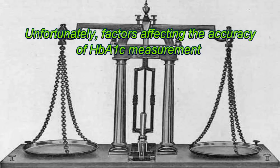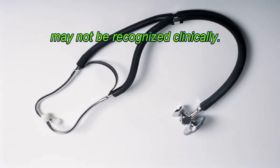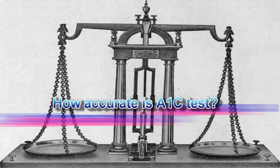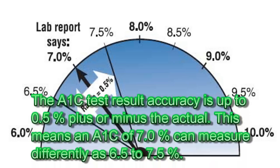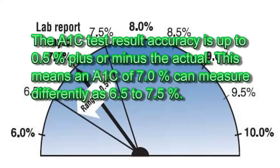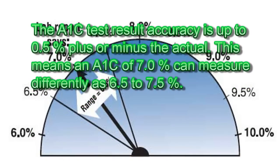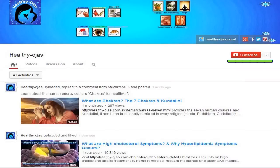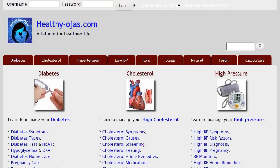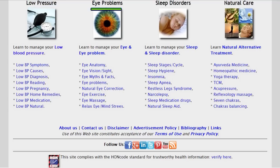Unfortunately, factors affecting the accuracy of HbA1c measurement may not always be recognized clinically. The A1c test result accuracy is up to plus or minus 0.5% of the actual value, meaning an A1c of 7.0% could be measured as anywhere from 6.5% to 7.5%. Subscribe to our video channel for more videos and visit HealthyOjas.com for useful information on diabetes, cholesterol, high and low blood pressure, eye and sleep problems.